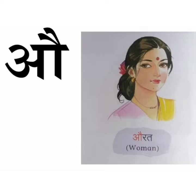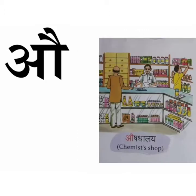AU se AUrat means woman. Mummy, auntie, grandmother — they all are women. AU se AUshadhal means chemist shop. We get all the medicines at the chemist shop.